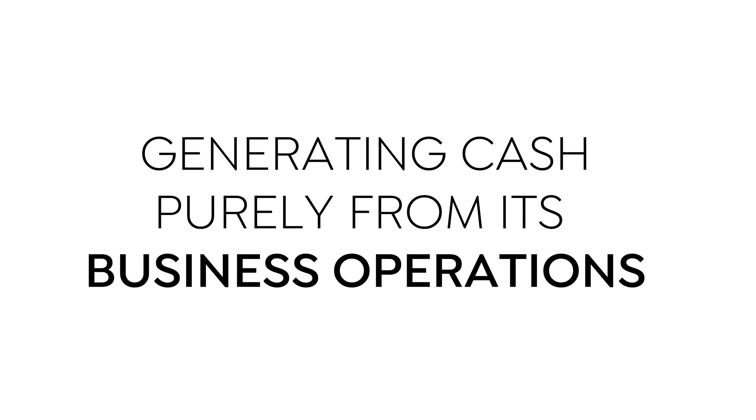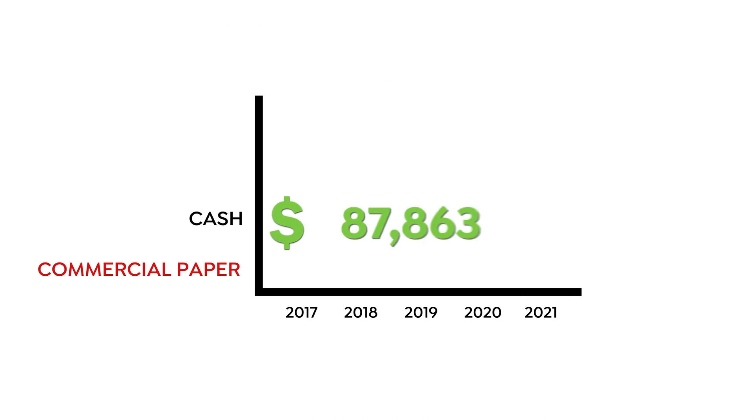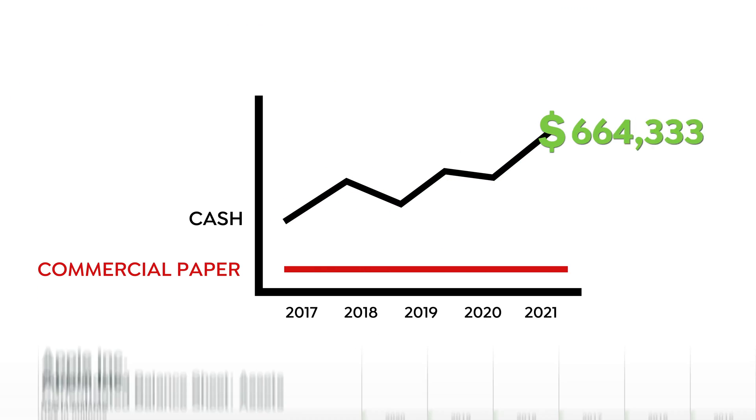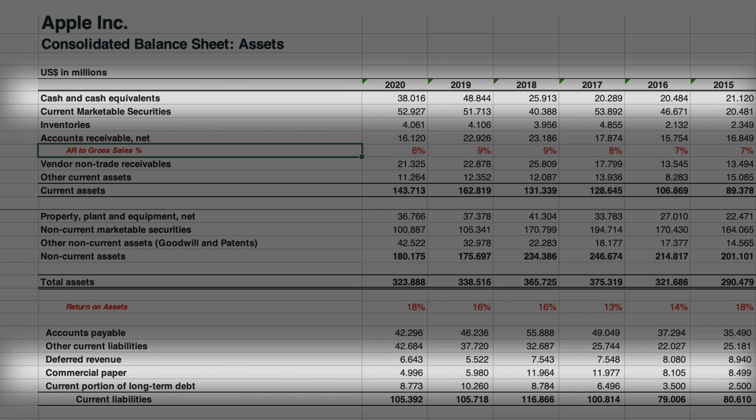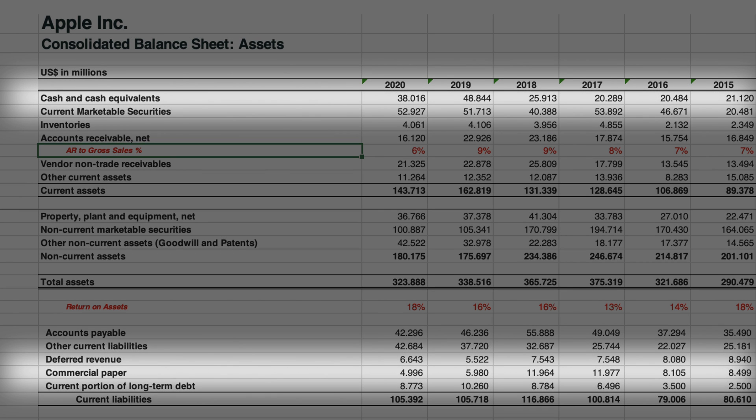The most important aspect of any company is to determine if it's producing and generating cash purely from its business operations. If a business cannot generate cash from its business operations, then it's not a business — it's a hobby. That's a quick check you can calculate in pretty much an instant, as shown here for Apple.